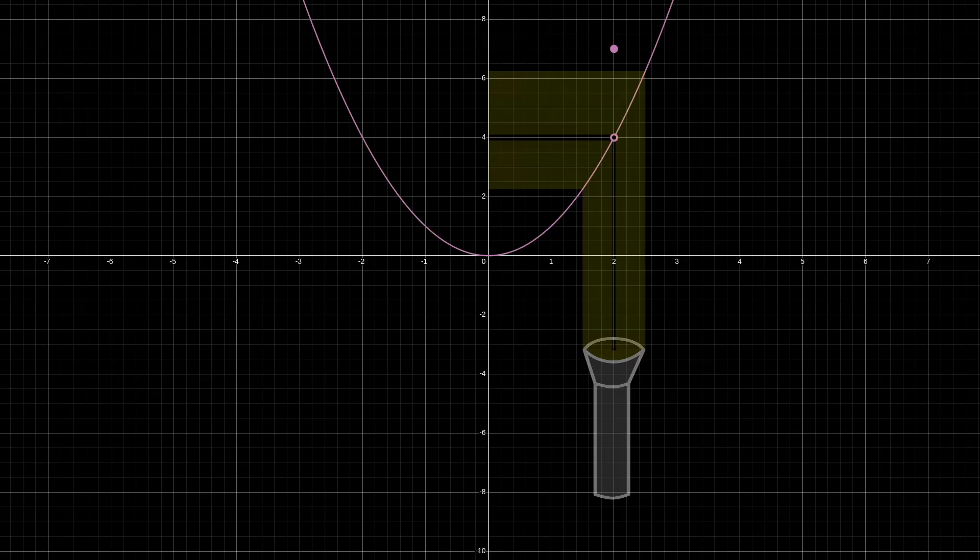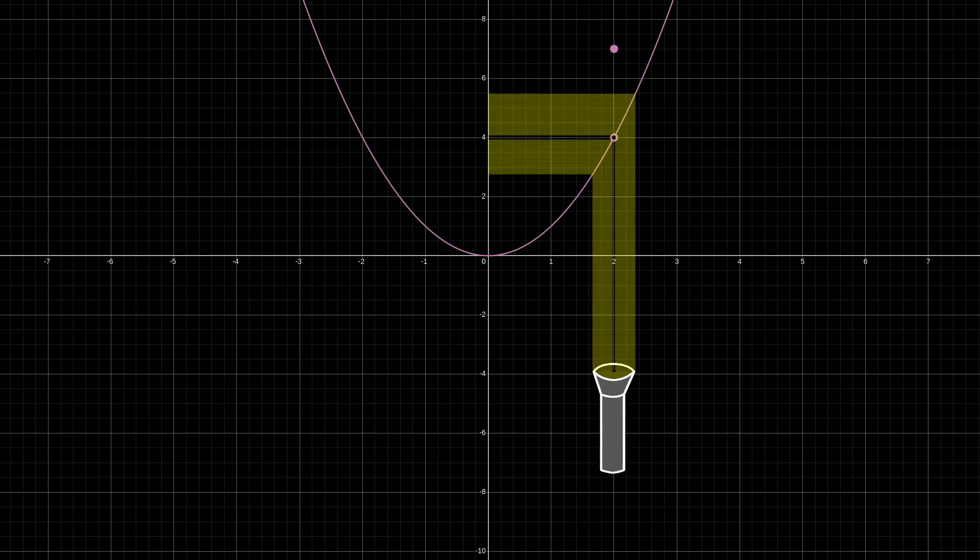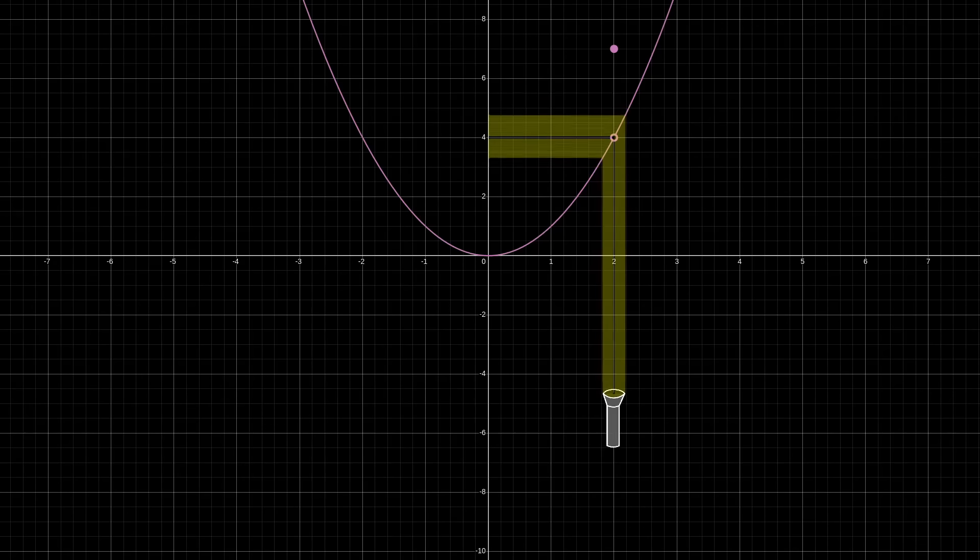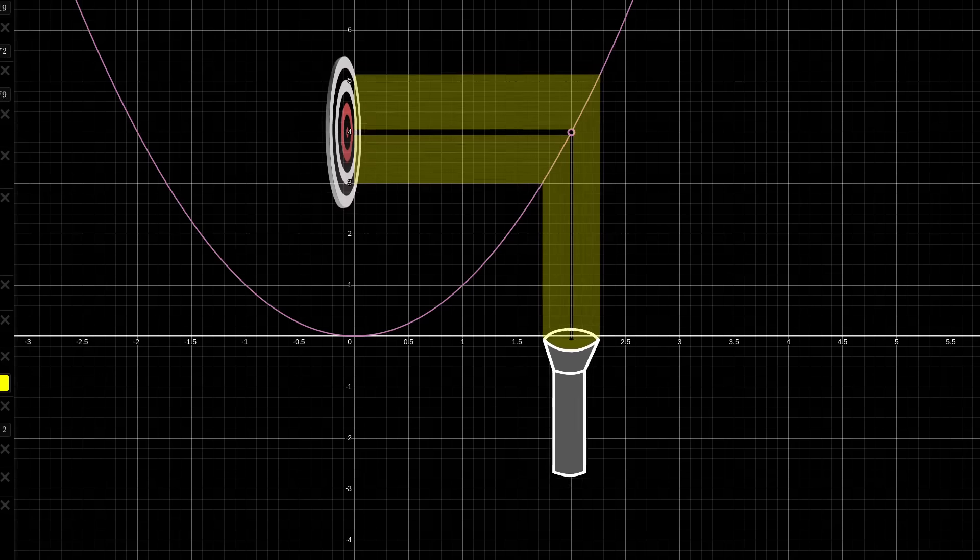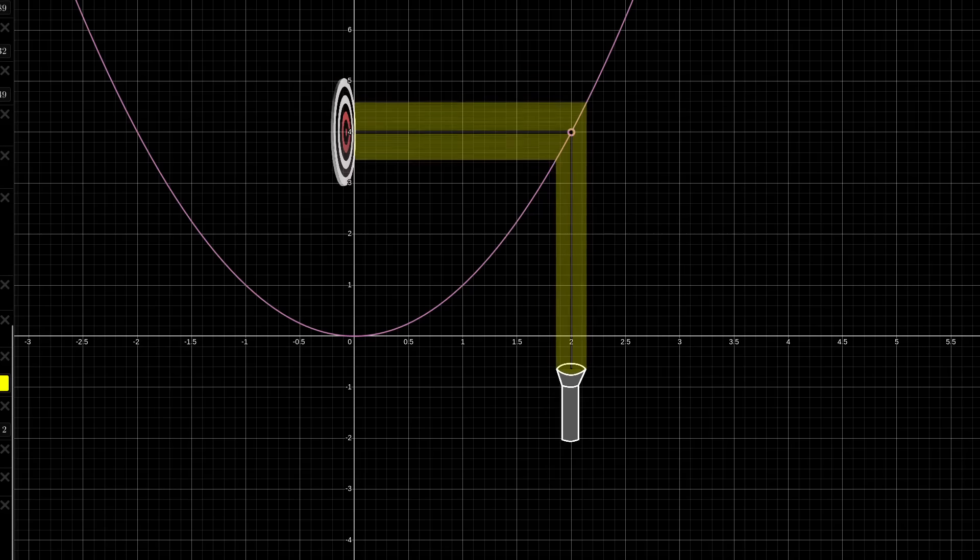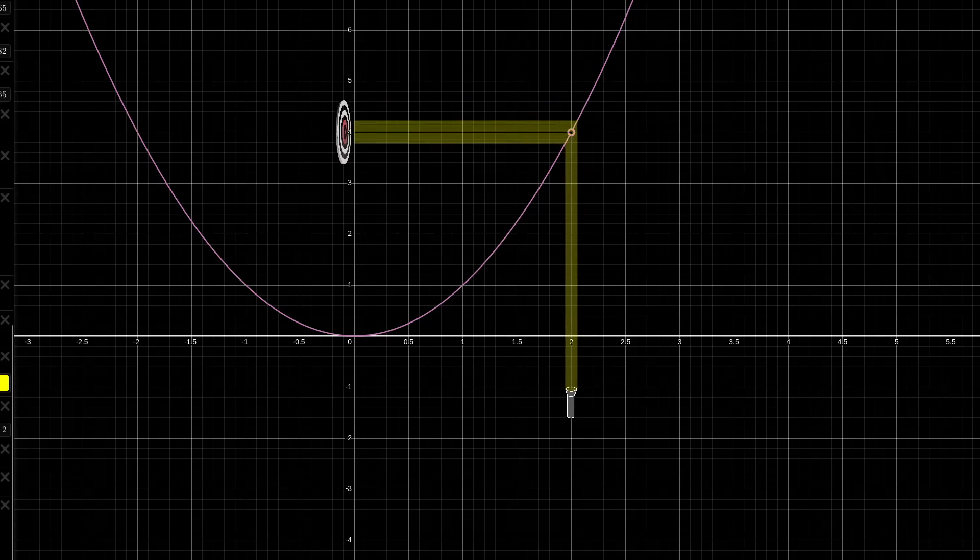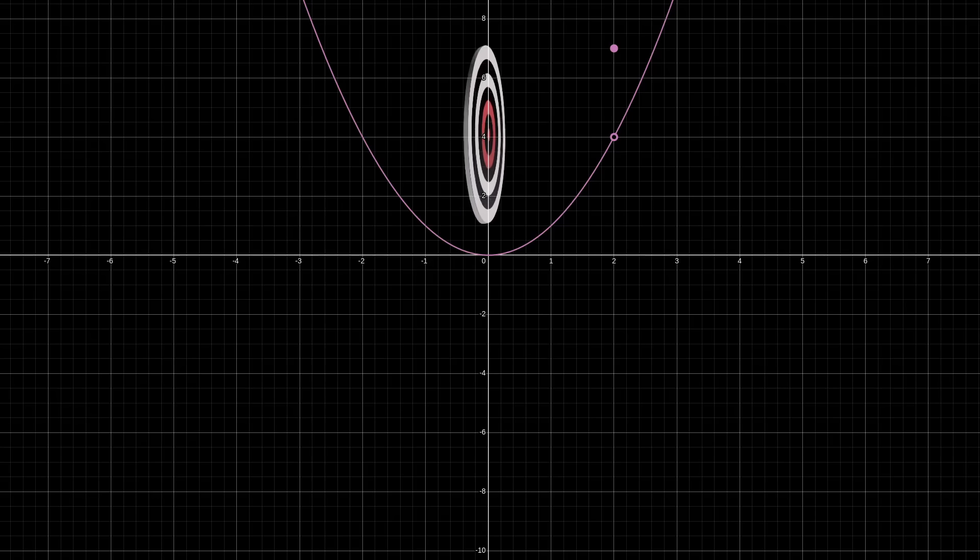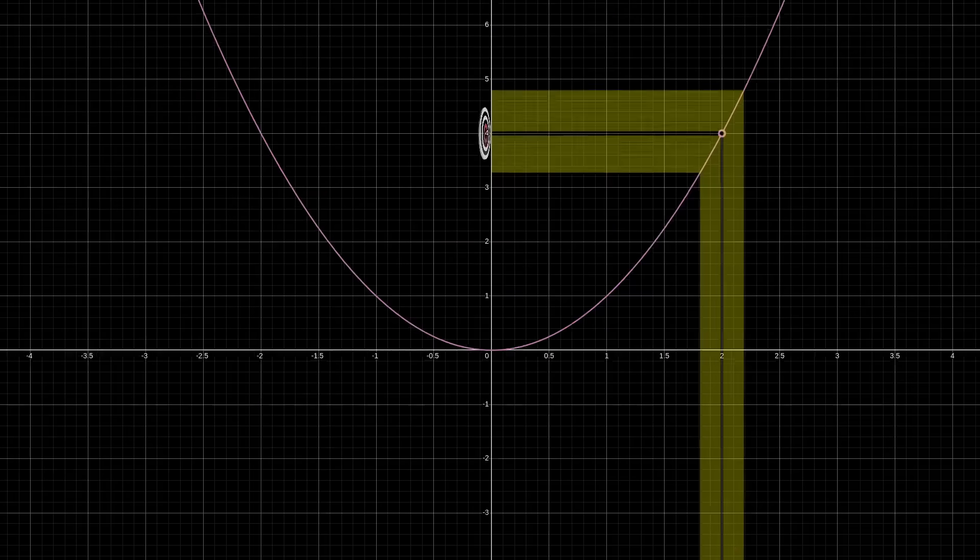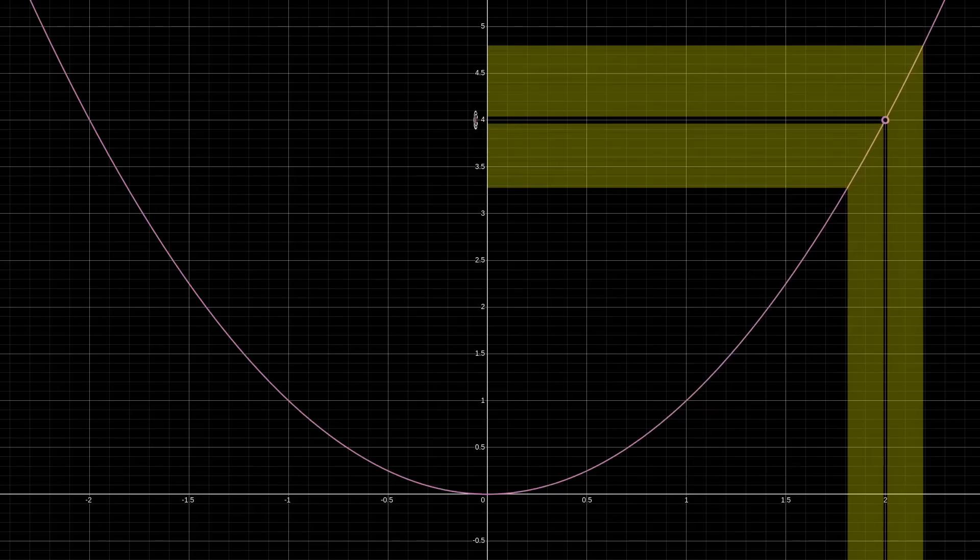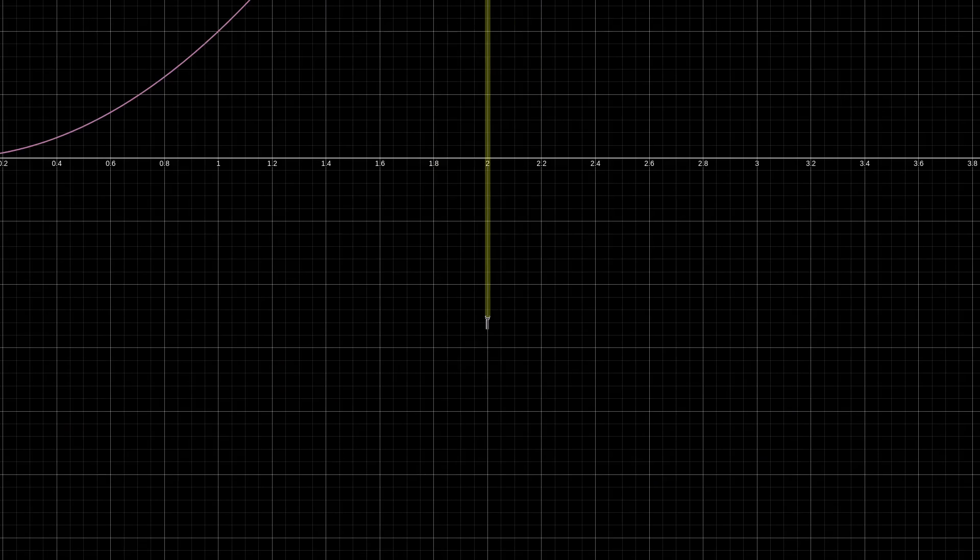So remember how with this function, we showed that as we choose smaller and smaller flashlights around the x value of 2, the resulting beam reflected on the y-axis tends towards 4? Well, what does that mean that it tends towards 4? Well, the rigorous way of defining it is to say that no matter how small of a target we place around y equals 4, we can make our flashlight small enough to narrow the beam onto that target. Like, say I shrink the target down to a radius of 1. Well, if I shrink the flashlight down to a radius of 0.2, its beam hits the target. But what if I make the target really, really tiny, like a radius of 0.1? Well, again, if I make the flashlight even tinier, like say a radius of 0.01, the resulting beam hits the target.